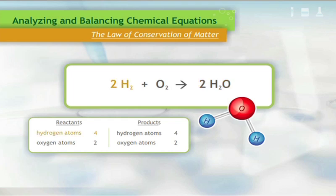There are four hydrogen atoms on the left side of the equation and four hydrogen atoms on the right side of the equation. The hydrogen atoms balance. There are two oxygen atoms on the left side of the equation and two oxygen atoms on the right side of the equation. The oxygen atoms balance.